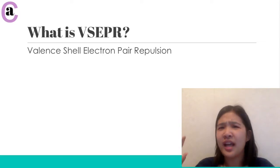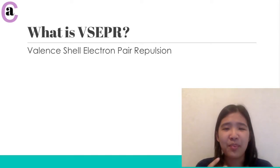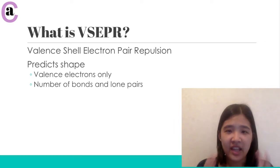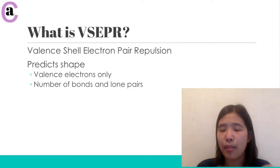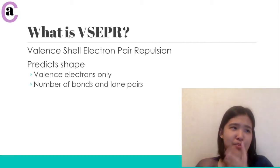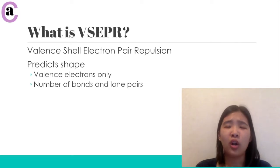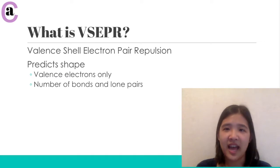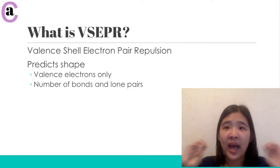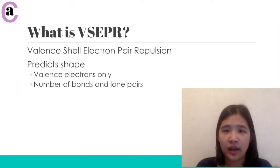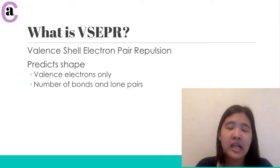That sounds like a bunch of words jumbled together, but the basic idea is that you only look at the valence electrons and you can predict the shape of any molecule. Remember from previous videos that a molecule is a chemically bonded mixture of atoms — they have different numbers of bonds and different numbers of lone pairs, and the way those are arranged can tell you what the molecule should look like. The basic idea is that atoms and lone pairs within the same molecule are going to try to repel each other as much as possible — electrons and bonds want as much personal space as they can get.